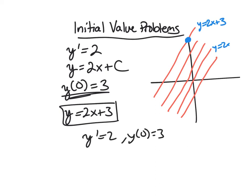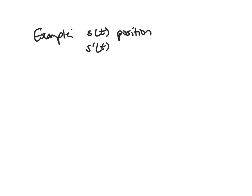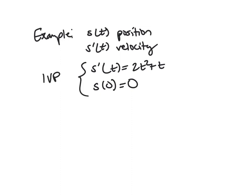So let's look at another example. So here, we're going to have s(t) be our function that we care about, and it will be position. So in that case, the derivative here would be velocity. And so what if you see the differential equation s'(t) = 2t² + t, and you know you're starting from a distance traveled of 0, or your initial position, we would say, is 0. So this would be an initial value problem, or an IVP.